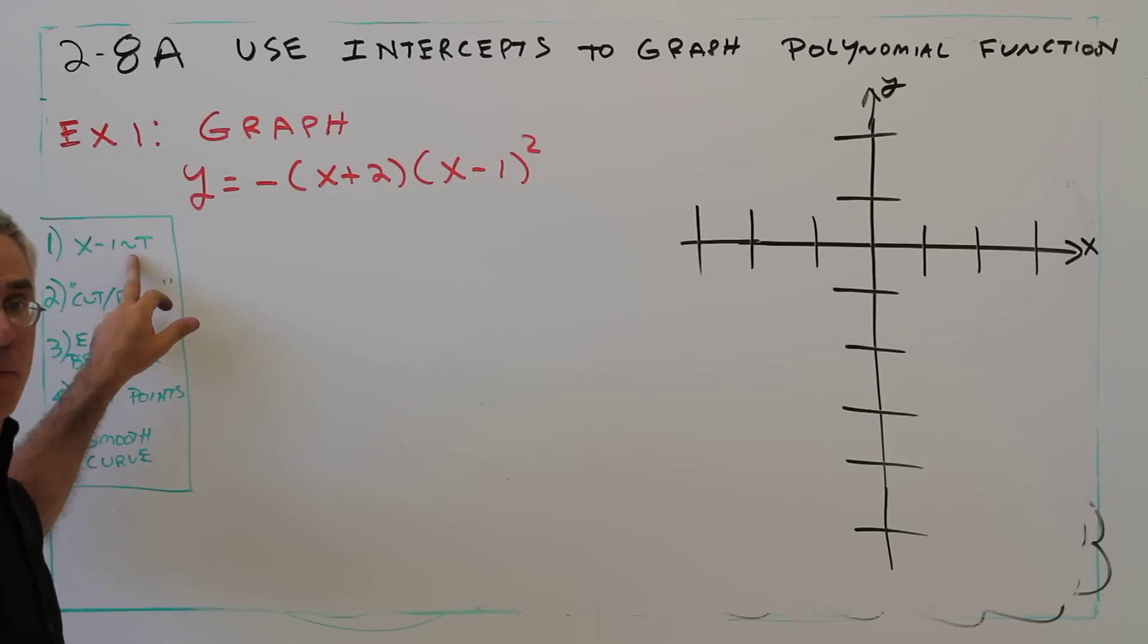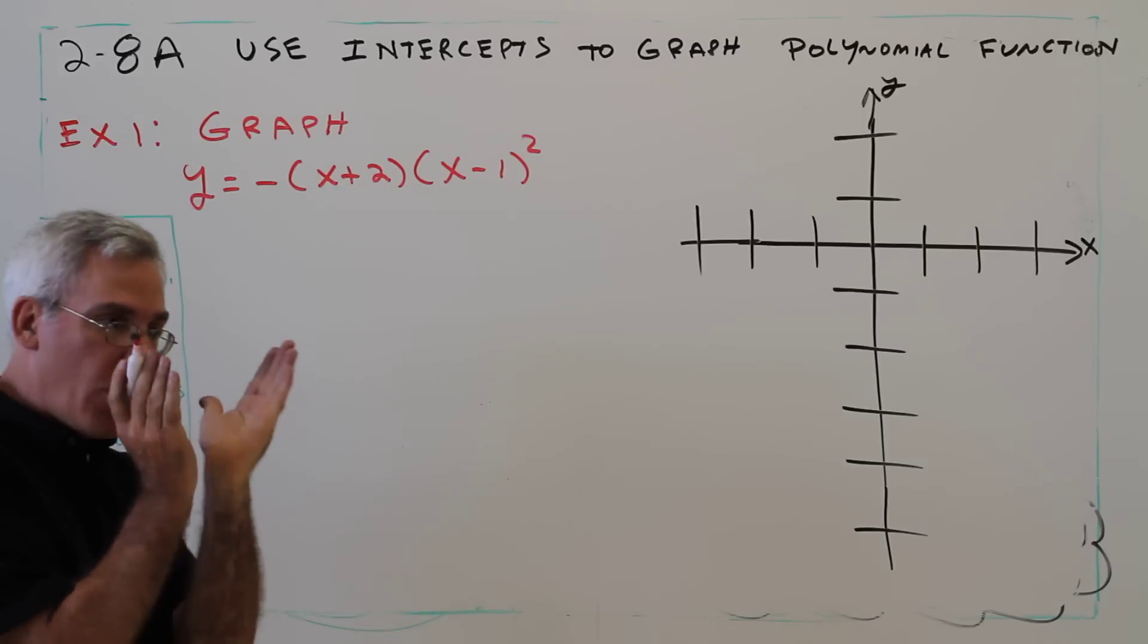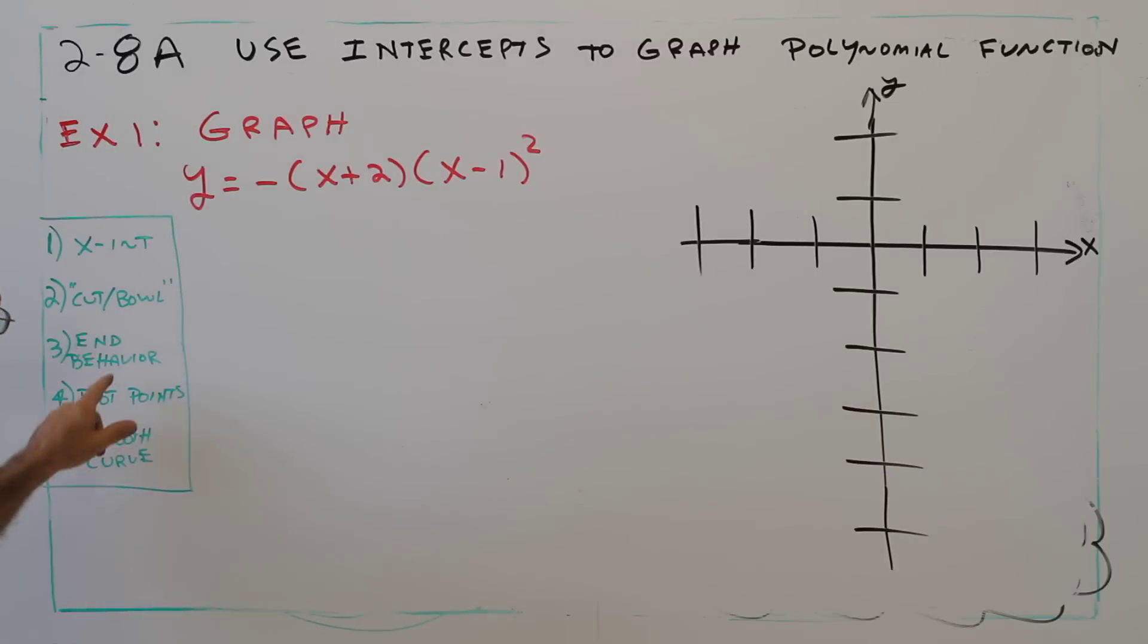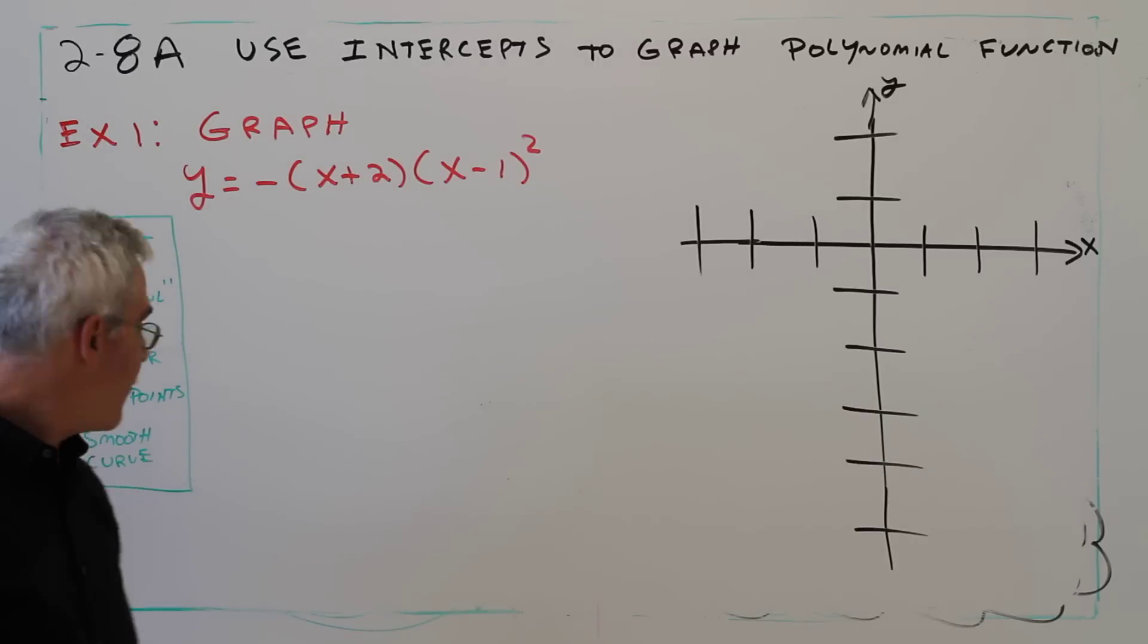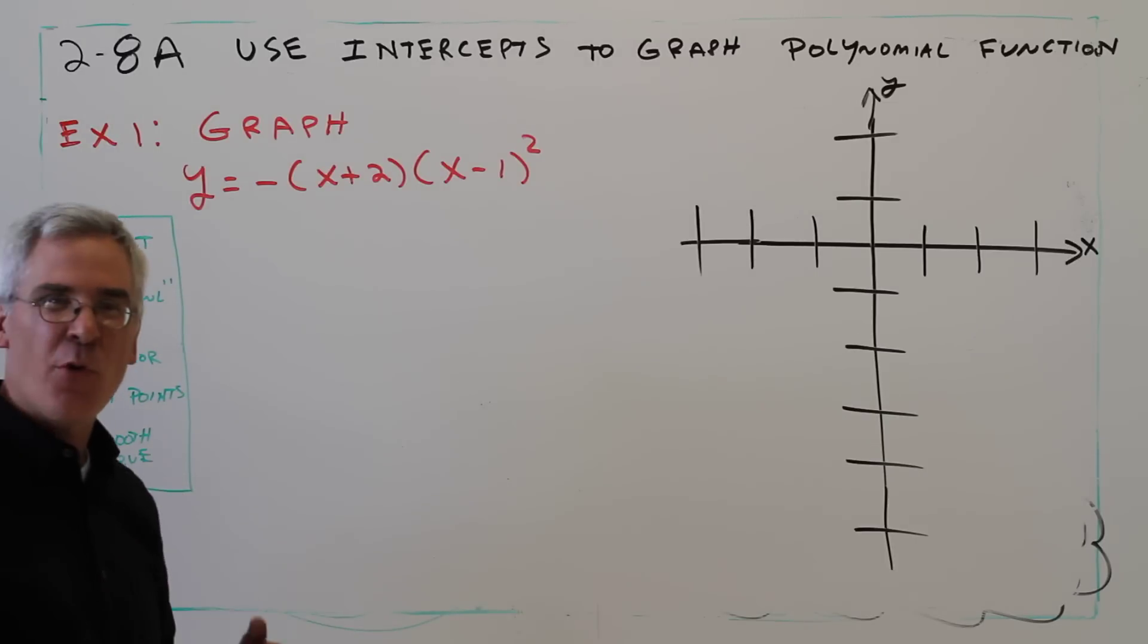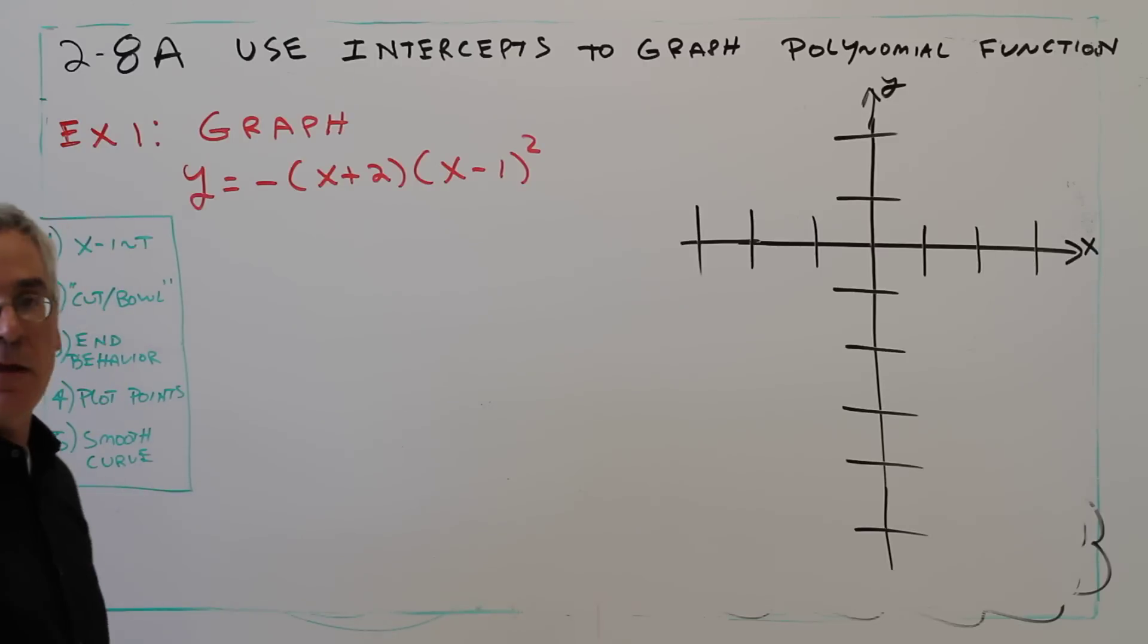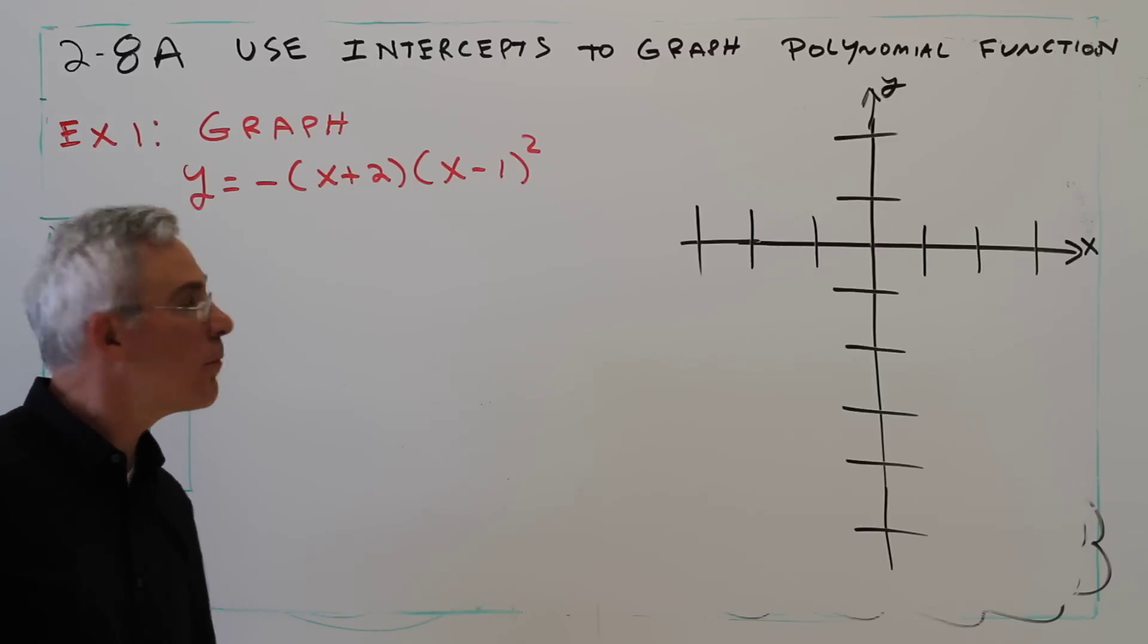We're going to have five main steps. Find the x-intercepts, determine if each one is a cut or a bowl and I'll explain what that means, determine the end behavior, plot a few points in between, and draw a smooth curve with arrows. Here we go.